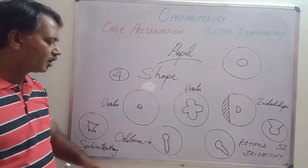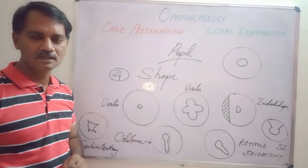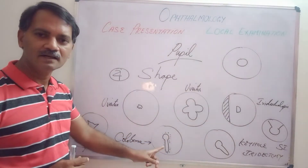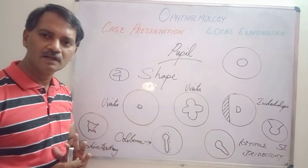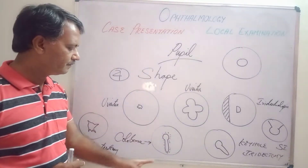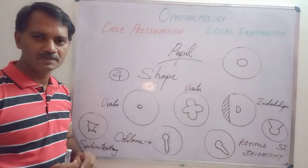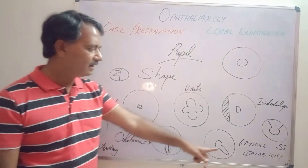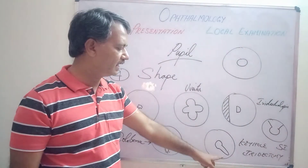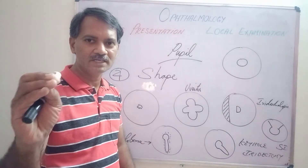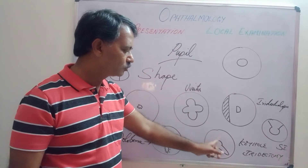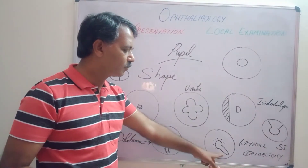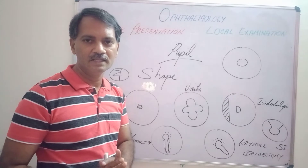Another important cause for an abnormally shaped pupil is coloboma of the iris — a congenital problem where there is a keyhole-like defect in the iris, giving a keyhole-shaped pupil. Because it is congenital, the sphincter pupillae muscle is present all around the keyhole, and when you throw light on the coloboma, the entire keyhole constricts. This is unlike a keyhole iridectomy, where only the semicircular portion constricts because the sphincter is present there, while the iridectomy portion has no sphincter and will not constrict.